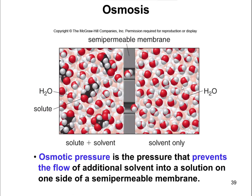Osmotic pressure is the pressure that results from these differing concentrations of solute across the semi-permeable membrane. It prevents additional solvent from going into the solution because of the differing concentrations of solute across that semi-permeable membrane.